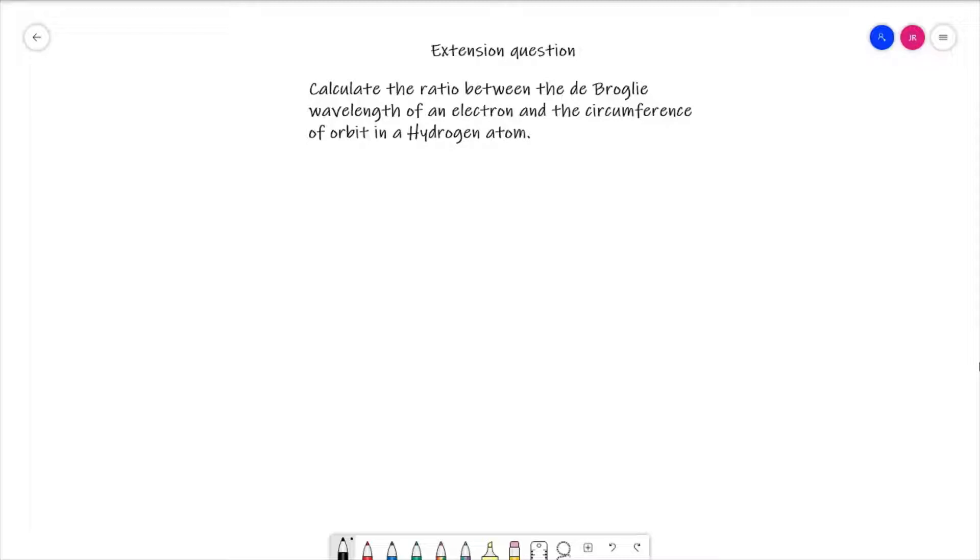Calculate the ratio between the de Broglie wavelength of an electron and the circumference of orbit in a hydrogen atom. As usual, pause the video, give it a go and then come back once you've tried it and I'll go through the answer for you.